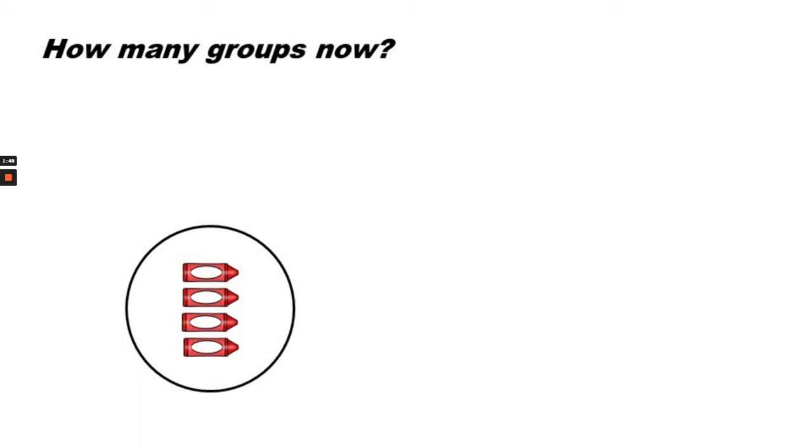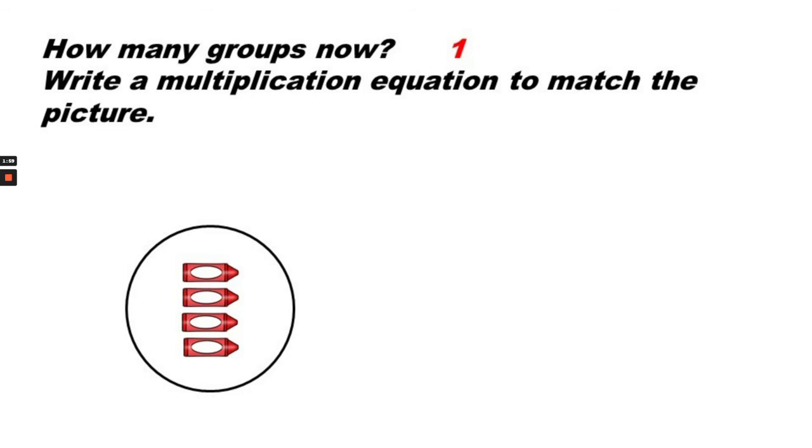How many groups now? Do you notice the pattern? We're taking away one group each time so now we're down to one group of 4. So the multiplication equation to match this picture would be one group of 4 or 1 times 4 equals 4.